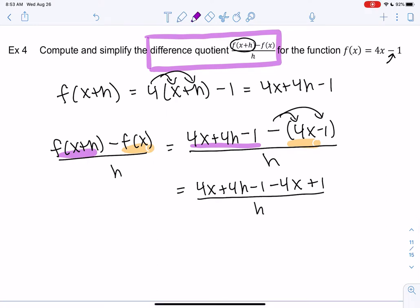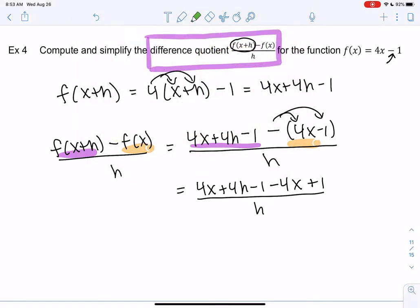Some nice things will happen. So let's see. 4x and -4x go away. -1 and 1 go away. So I just get 4h/h. And then the h's cancel out and we get 4. Does anybody notice what number this matches? It's the same as the slope.